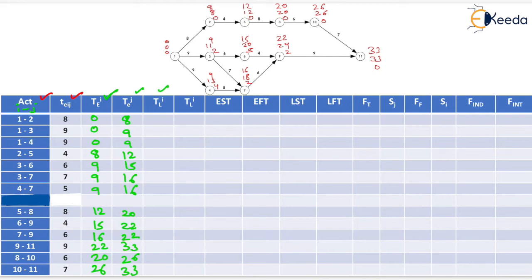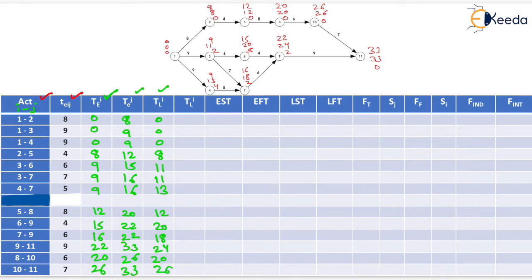Now we will fill the TLI column. TL for event 1 = 0 (three rows). For event 2, TLI = 8. For event 3, TLI = 11. For event 4, TLI = 13. For event 5, TLI = 12. For event 6, TLI = 20. For event 7, TLI = 18. For event 9, TLI = 24. For event 8, TLI = 20. For event 10, TLI = 26.